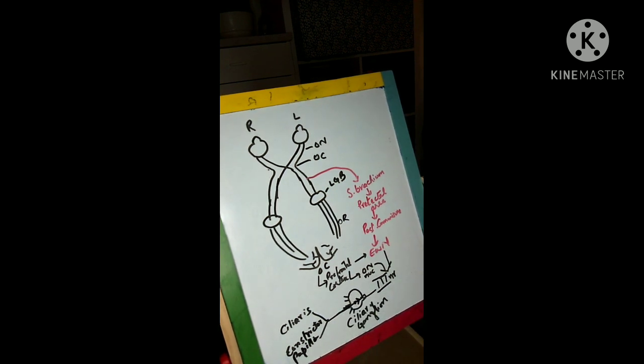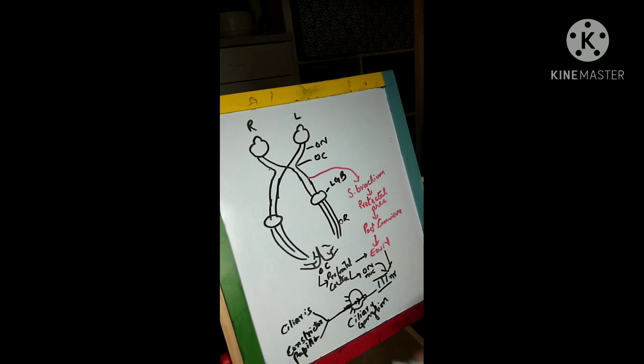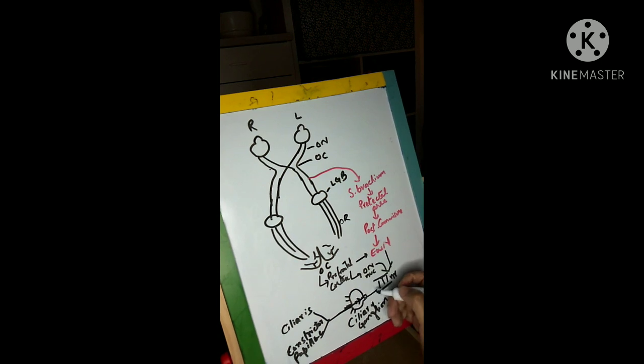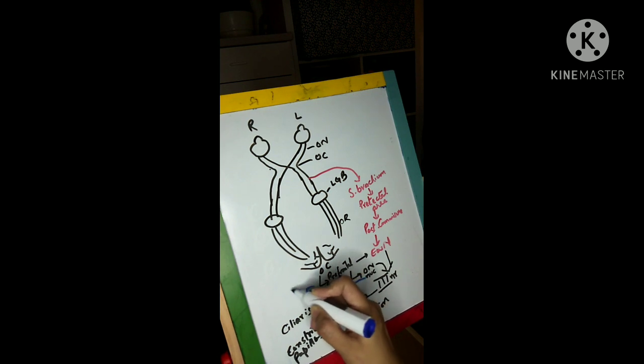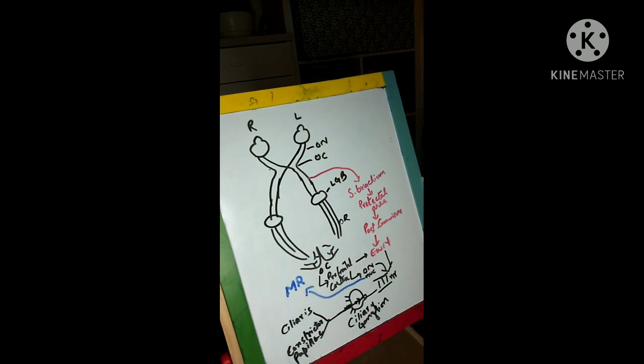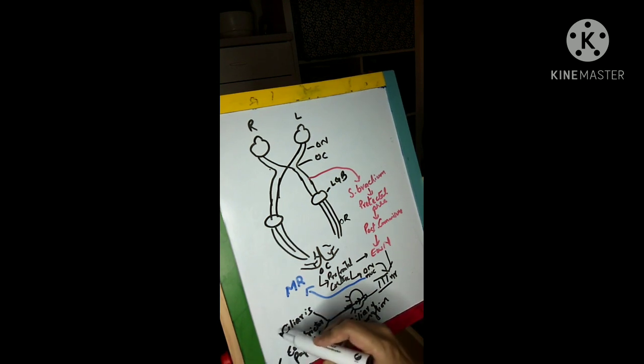These nerves later on supply the ciliary muscle and the constrictor pupillae muscle. You also know that third nerve supplies the extraocular muscles. So I will show that third nerve also supplies the medial rectus. Actually, third nerve supplies the other muscles also. Only lateral rectus is supplied by the sixth nerve and superior oblique is supplied by the fourth nerve. The other extraocular muscles are supplied by third nerve. So here we need only medial rectus, so I have described only medial rectus here.